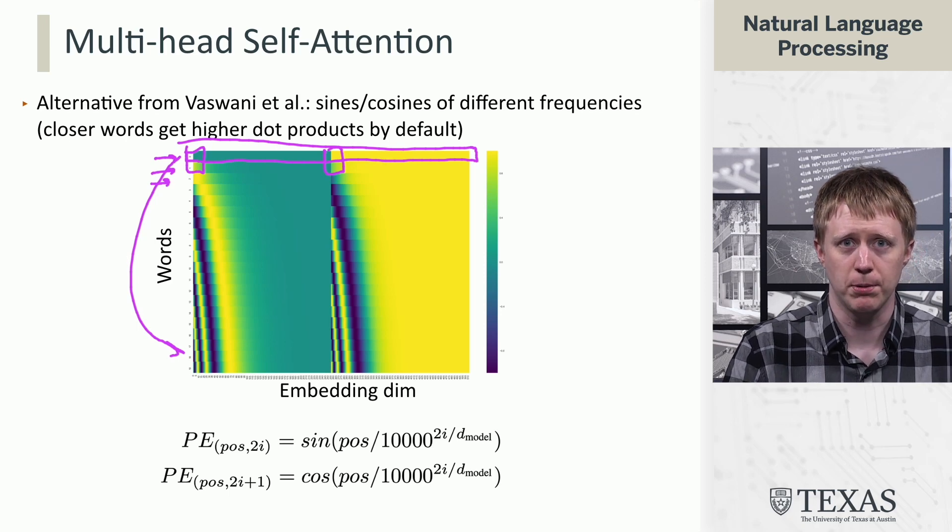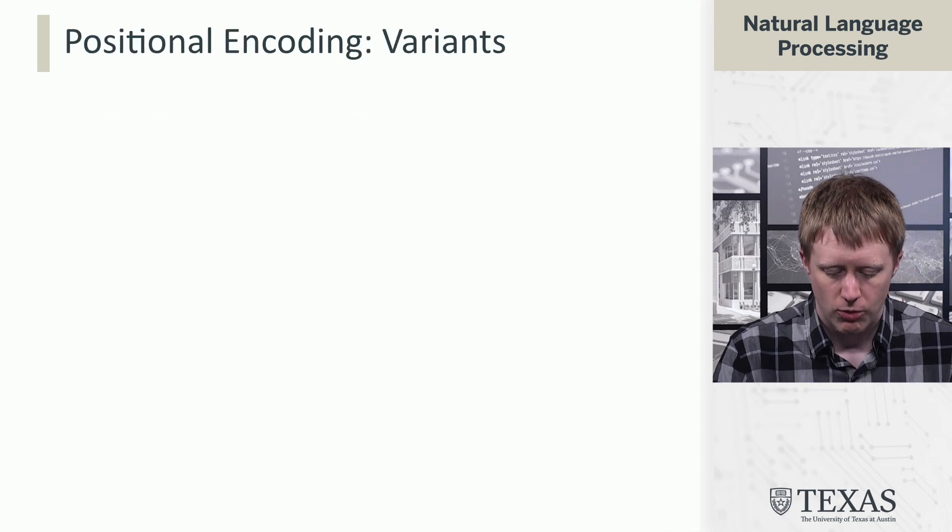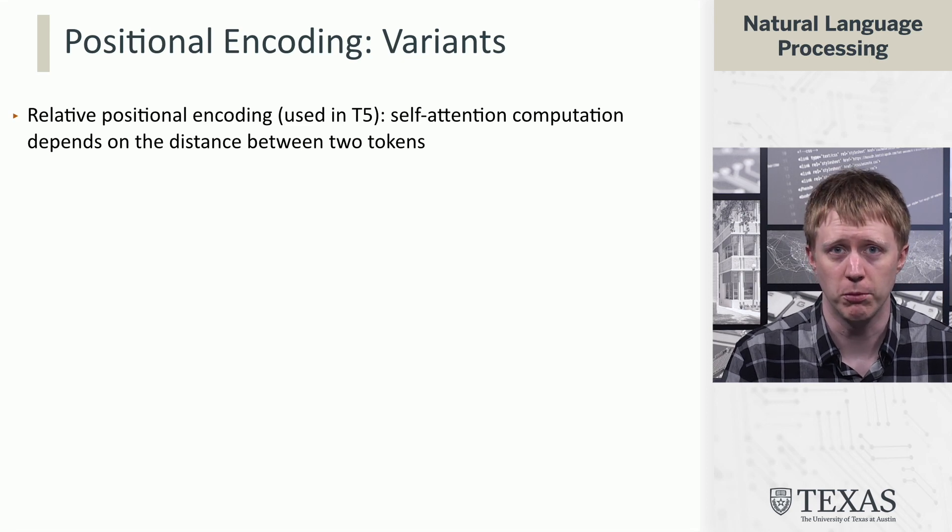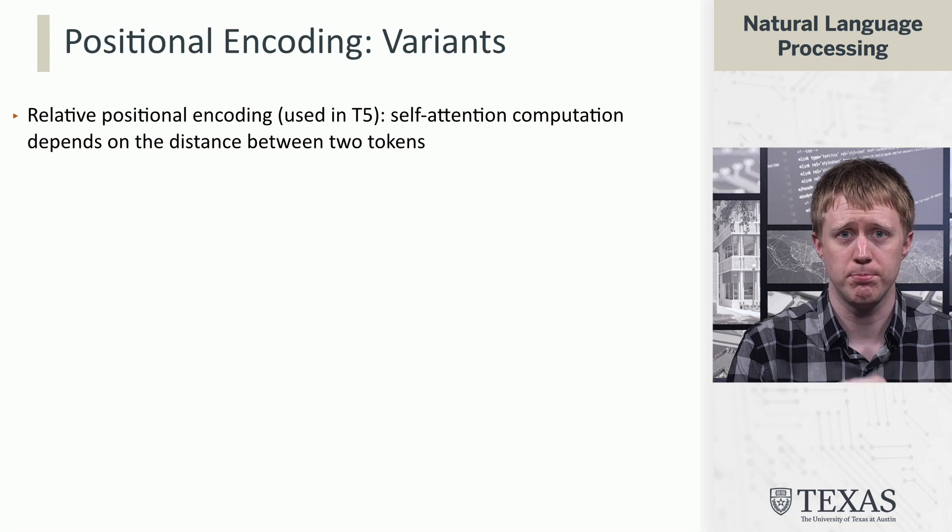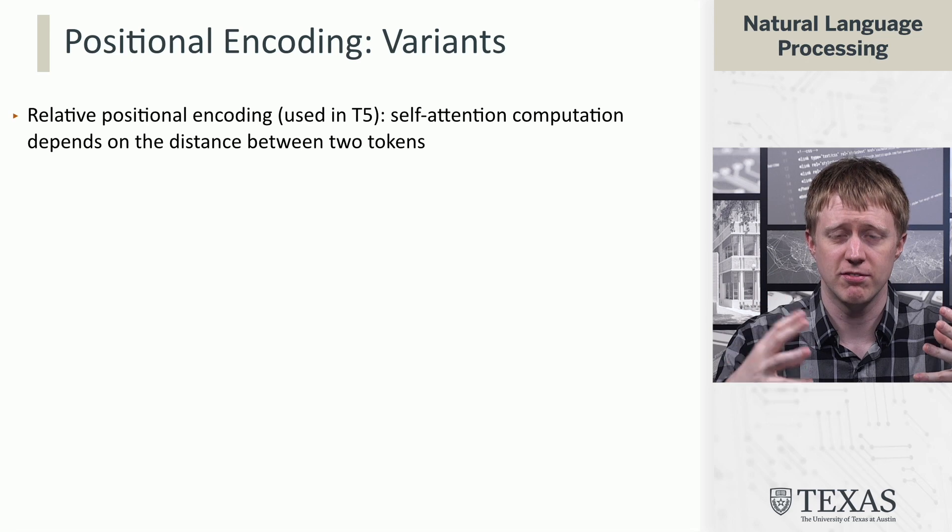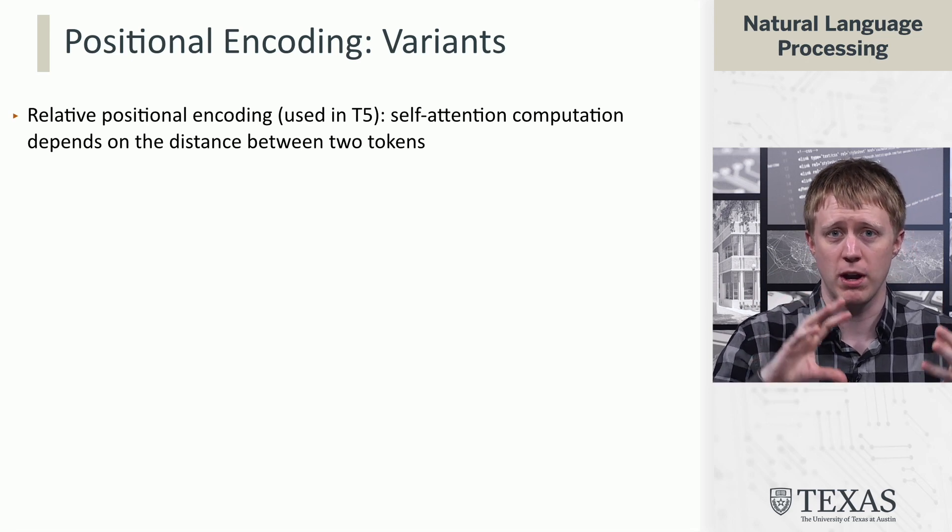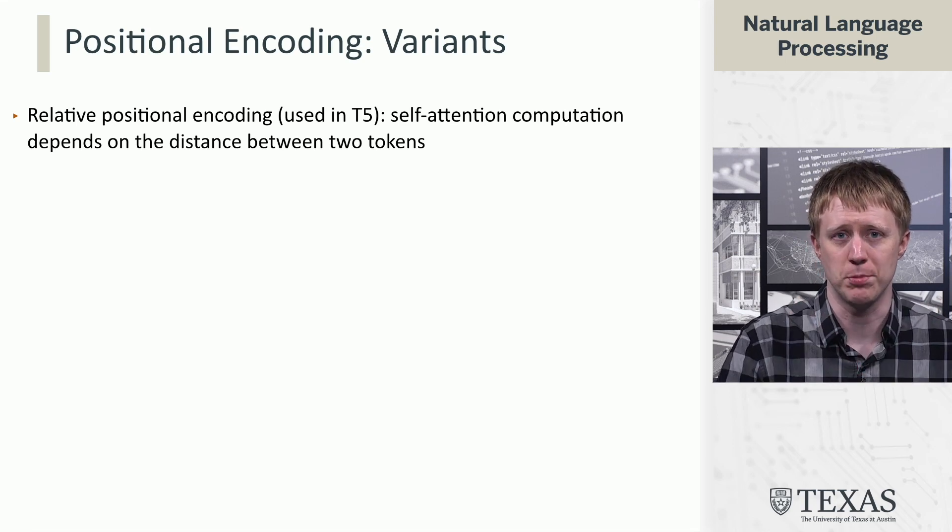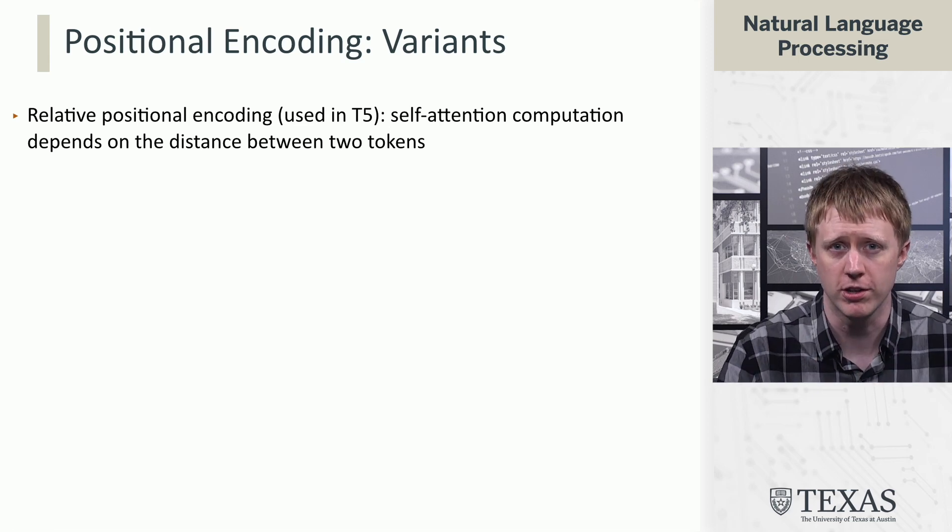I'm just going to mention a couple of more recent variants here of these mechanisms. One is called relative position encoding, which is used in the T5 model that we'll talk about later in the semester, which uses self-attention. And in that computation, it actually injects the position encoding directly into the kind of query times key matrix computation by modeling the distance between any two tokens. So it doesn't capture absolute position, but instead how far apart are these two things?